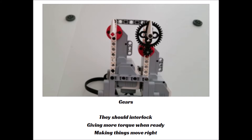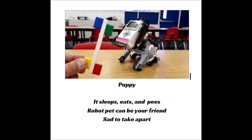Let's take a look at another one on the puppy — this project is a favorite of my students. Here's the haiku about the EV3 puppy: 'It sleeps, eats, and pees.' For those of you that have built the puppy, you know exactly those three things — it does sleep, eat, and pee. That's five syllables. 'Robot pet can be your friend.' That's seven — this robot makes my students think that one day they can have robotic pets. 'Sad to take apart.' That's five. They're always sad to take this apart more than any other robot, because they feel like it's a living thing rather than just a moving robot.